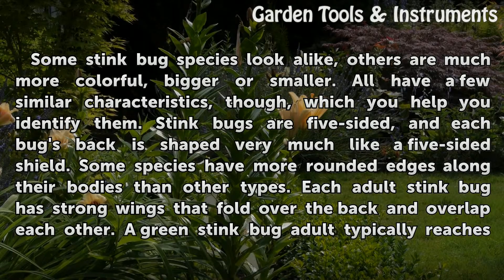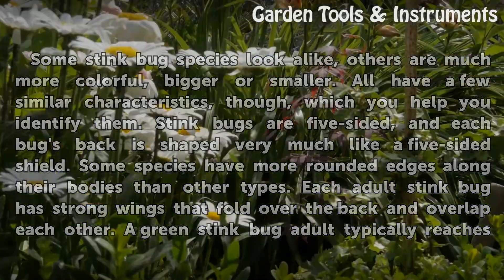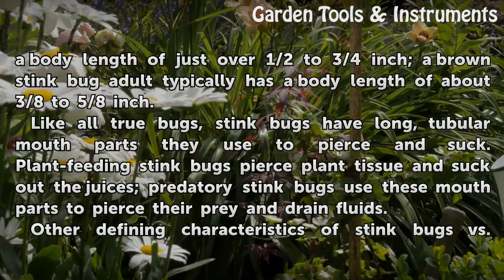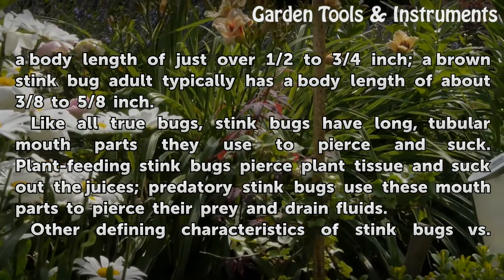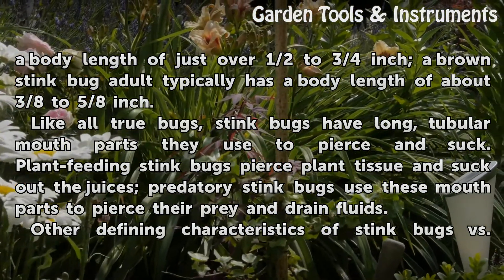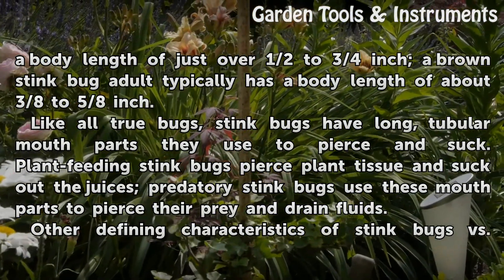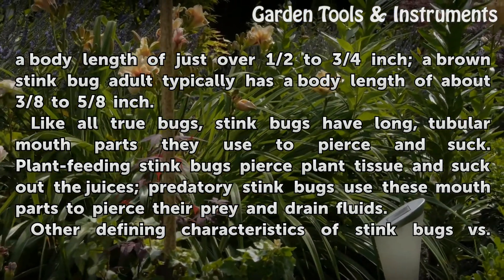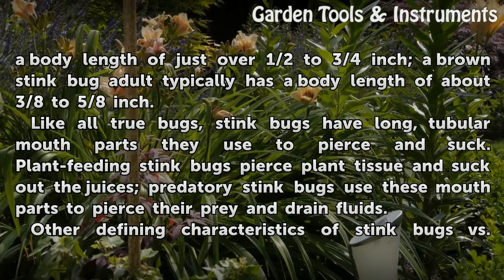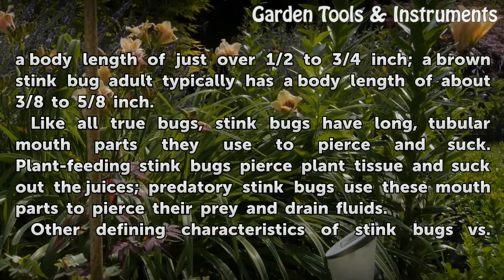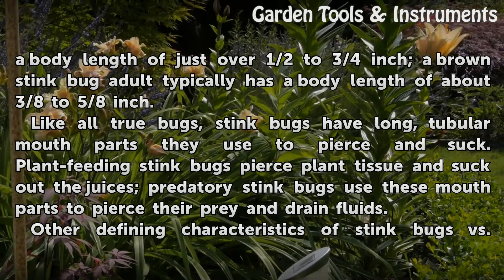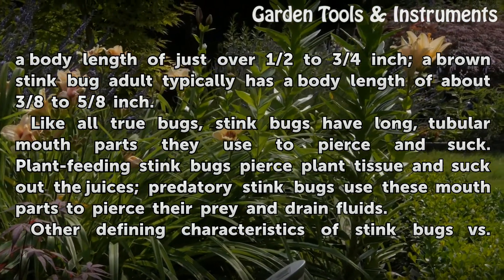Each adult stink bug has strong wings that fold over the back and overlap each other. A green stink bug adult typically reaches a body length of just over half to three-quarters inch. A brown stink bug adult typically has a body length of about three-eighths to five-eighths inch. Like all true bugs, stink bugs have long, tubular mouthparts they use to pierce and suck. Plant-feeding stink bugs pierce plant tissue and suck out the juices; predatory stink bugs use those mouthparts to pierce their prey and drain fluids.